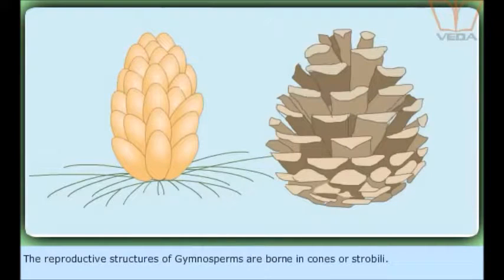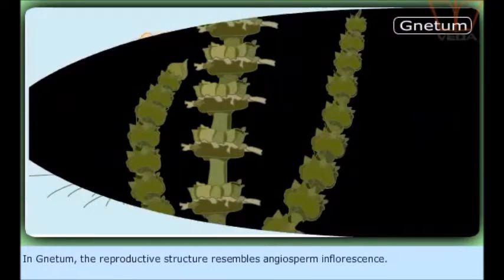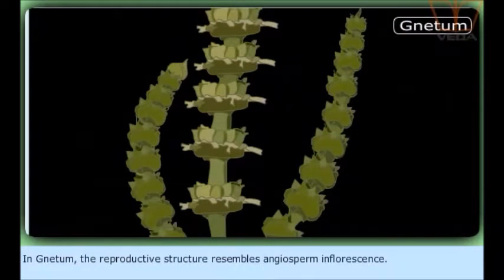The reproductive structures of gymnosperms are borne in cones or strobili. In Gnetum, the reproductive structure resembles that of angiosperms in inflorescence.